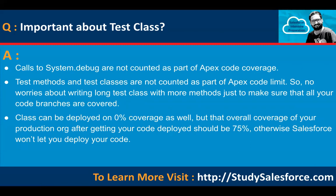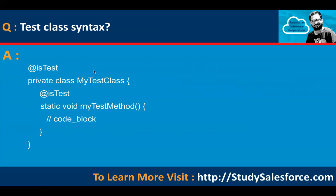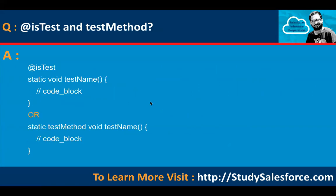A class can be deployed at 0% coverage, but the overall coverage of your production after deployment should be 75%, otherwise Salesforce won't let you deploy your code. Regarding test class syntax: if you want to convert a class into a test class, you just need to add the @isTest annotation before the class and before each method as well.